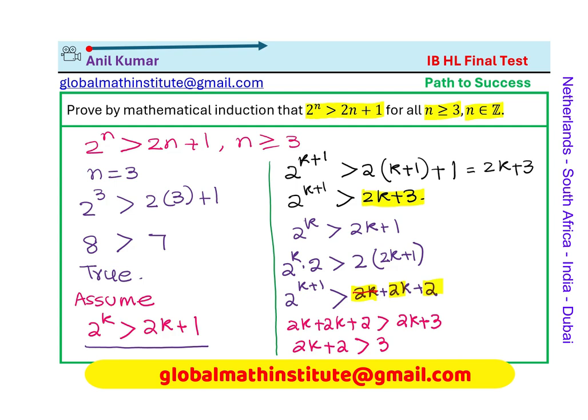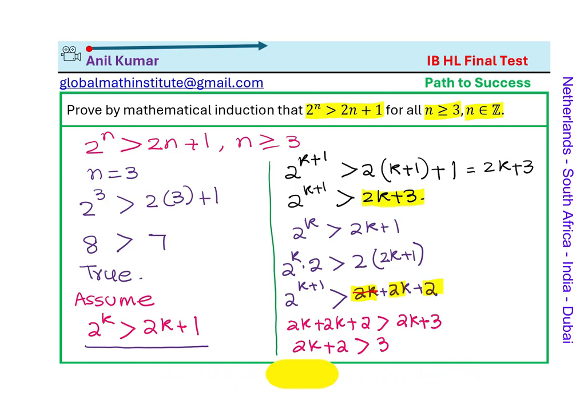Now 2k plus 2 has to be greater than 3 because the value of k is minimum is 3. So since we know that k is greater than or equal to 3, so if I substitute 3 there, then we get that this statement is true. Perfect.